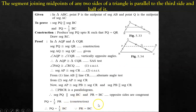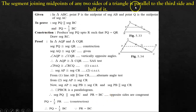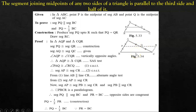Hence proved. We have proved that the segment joining midpoints of any two sides of a triangle is parallel to the third side and half of it.